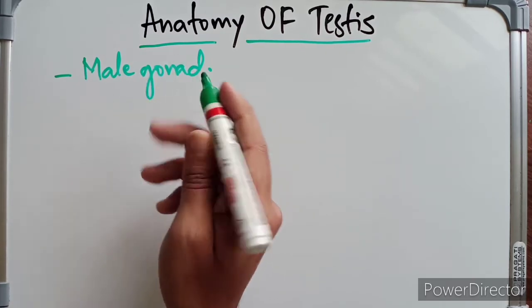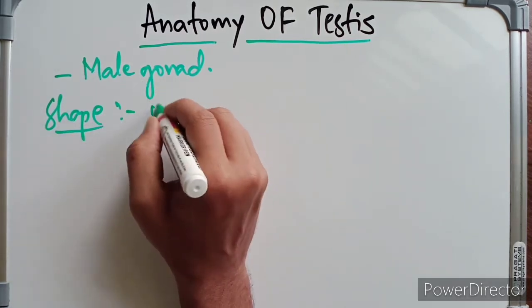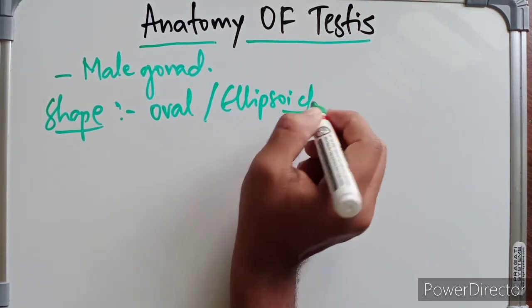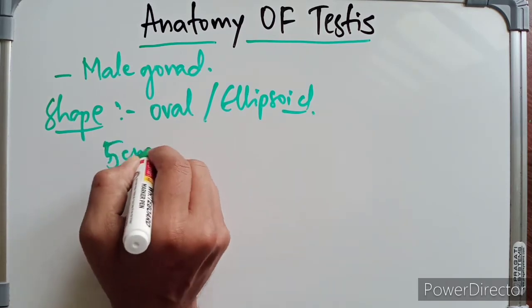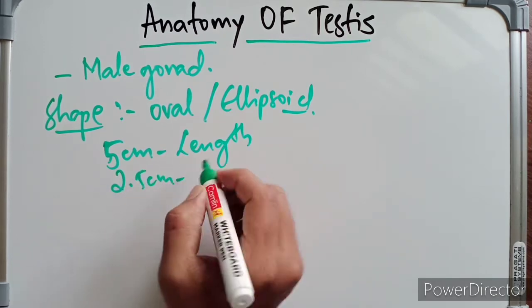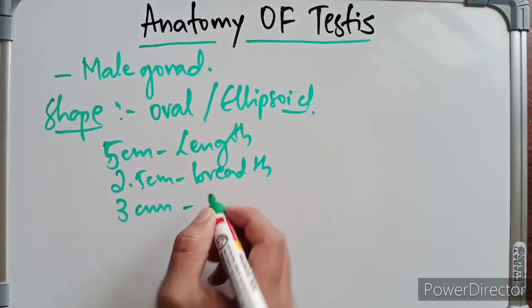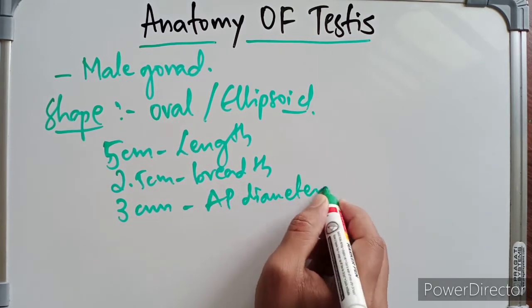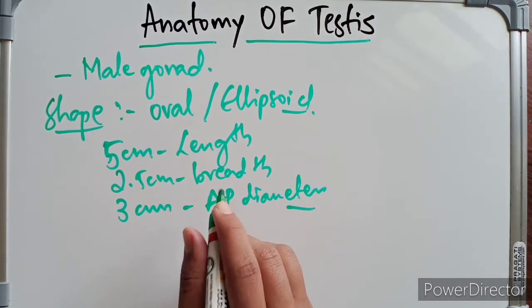Coming to the shape, the testis is oval or ellipsoid in shape. It measures about five centimeters in length, around 2.5 centimeters in breadth, and three centimeters along the anterior-posterior diameter. This is about the shape and measurements.